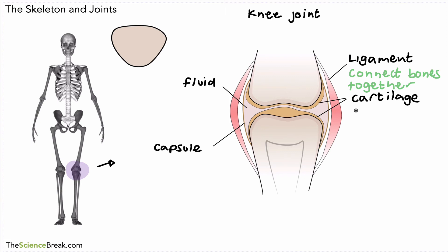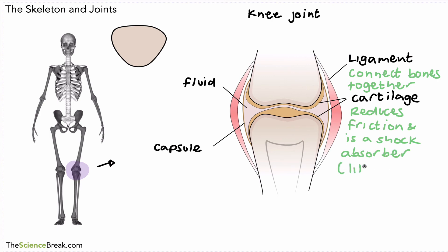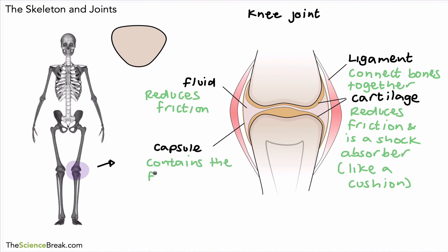The cartilage covers the end of the bone. Its job is to: one, reduce the friction between the bones as they move; and also act like a shock absorber — a bit like a cushion — so it absorbs any kind of excessive force that is placed on that joint. The fluid inside also reduces friction. And the capsule is the part that contains that fluid — it covers the joint and contains the fluid mentioned above.